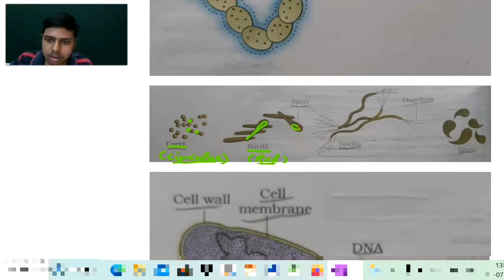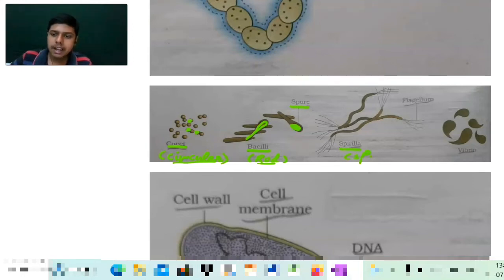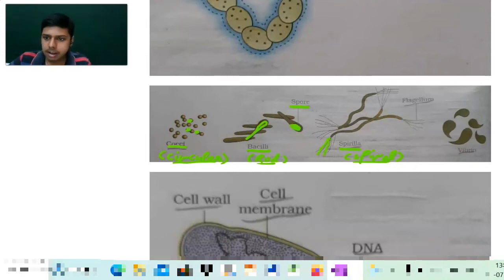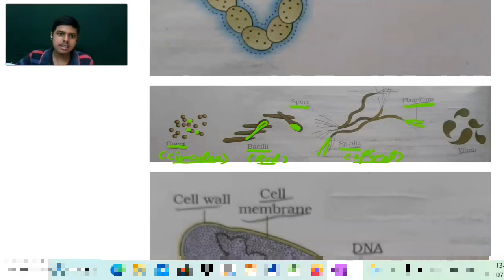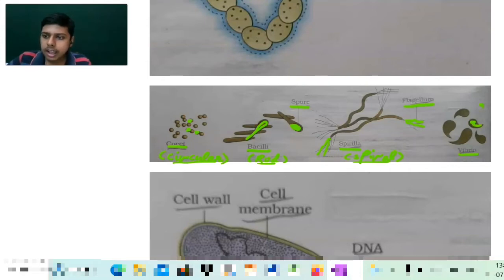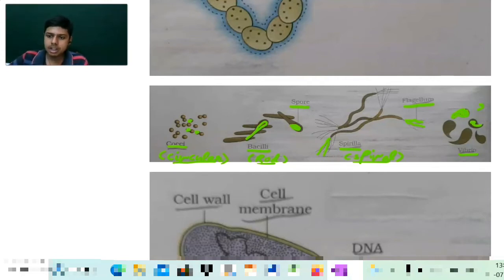This small circular ovular type of structure which you can see here is the spore. Now spirilla — the spiral shaped bacteria. As you can see, there are certain flagella also present here. This is spiral in shape. Now vibrio shape — you can see it is more or less equivalent to a comma. These are your comma shaped vibrio.